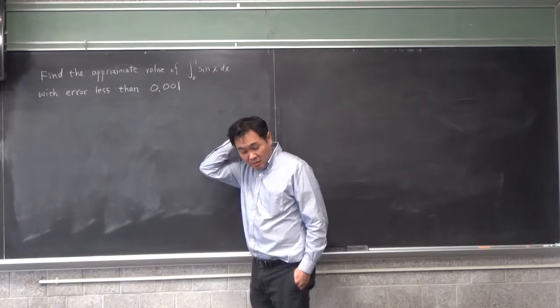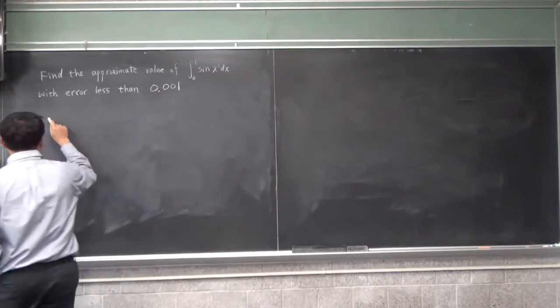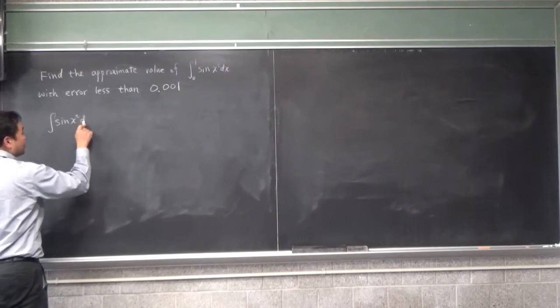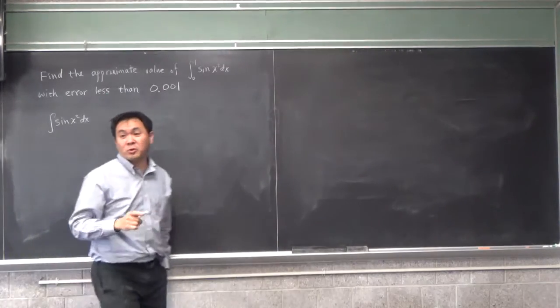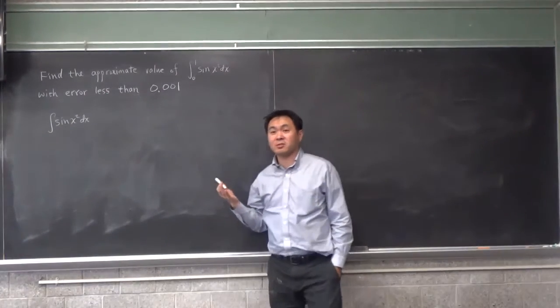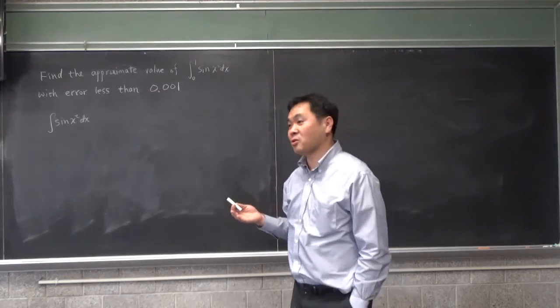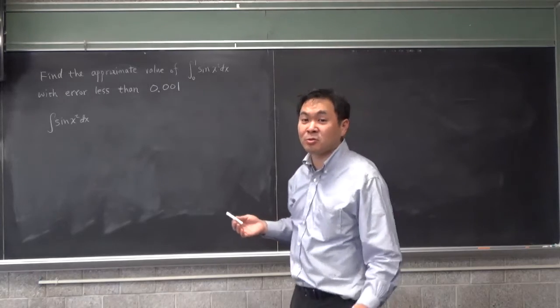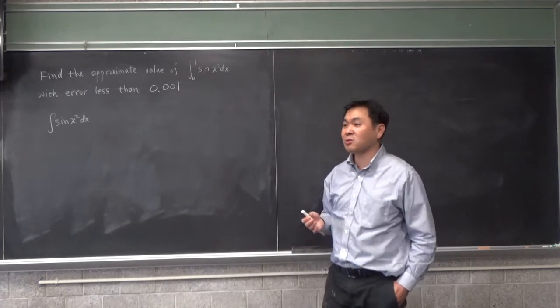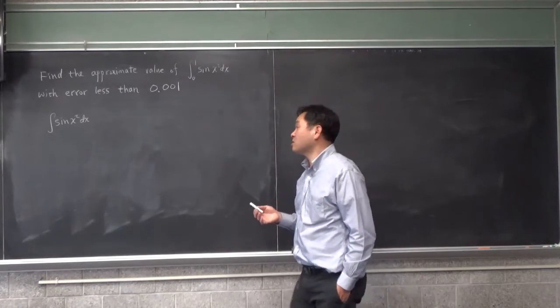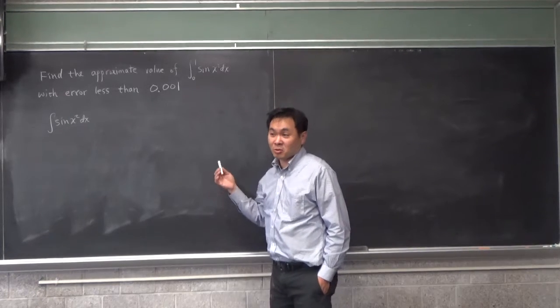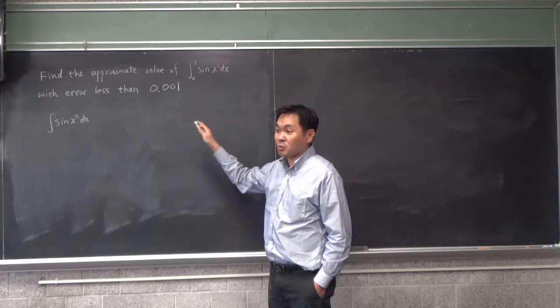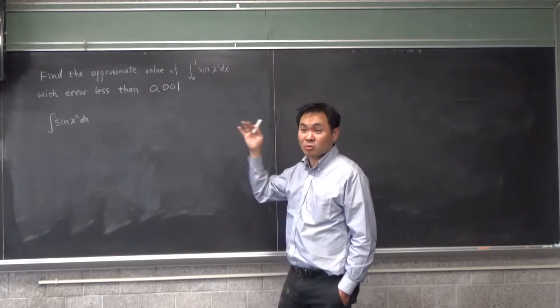This integral, the integral of sin²(x), is one of these integrals where you can't integrate by using any methods that you know. Like u-substitution is not going to work, even after u-substitution, if you try to integrate by parts or other things, you can't do that integral. So it's an example of an integral where you can't write down the antiderivative in a closed form.